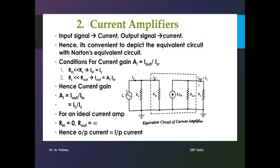Similarly, the output current Iout must be maximum. This current flows from the output node, and if the output resistance Rout is very high — ideally infinite — it acts as an open circuit, so most of the current flows through the load resistance. Therefore, the input resistance must be zero and the output resistance must be infinite for a current amplifier, and the output current will be proportional to the input current. Thank you.